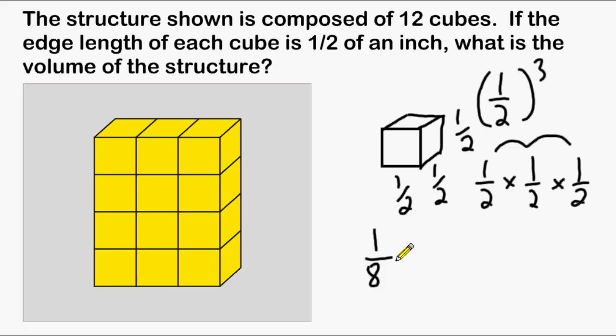And because we have twelve cubes, we may multiply that volume by twelve. And when multiplying a fraction by a whole number, simply write a number one underneath that whole number. One times twelve is equal to twelve, and for the denominators we multiply eight times one, and that gives us a product of eight. Twelve over eight may be reduced to three halves, and three halves may be rewritten as the mixed number one and one half cubic inches.